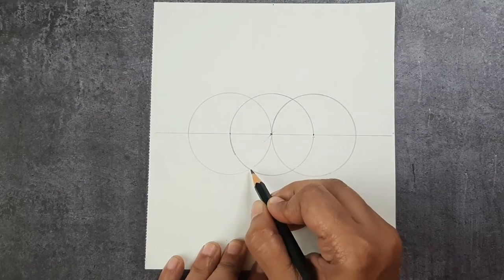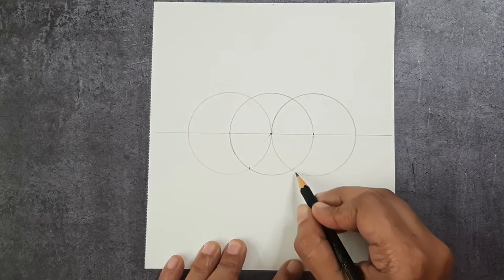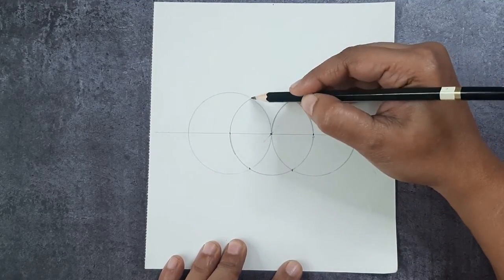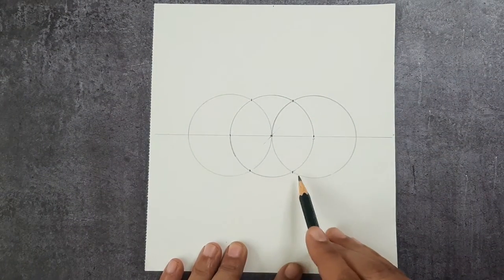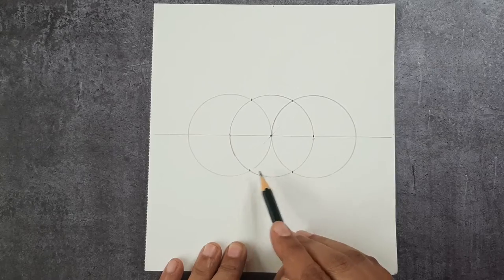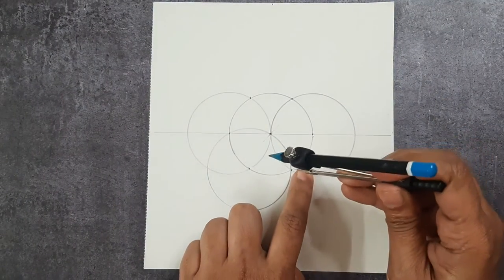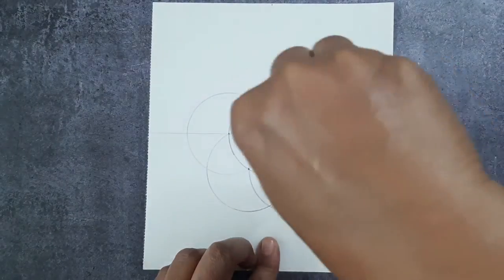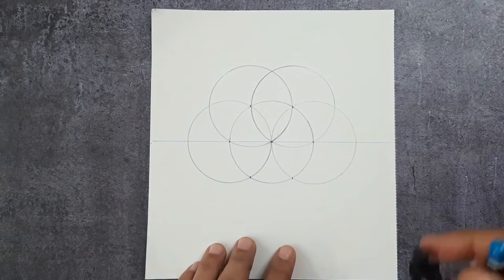This is one and this is two, this is three and this is four. Now I'm going to draw circles keeping these as center points. So I'll start from here. Now the second one, now the third and the fourth. I'll turn the paper around for my convenience.